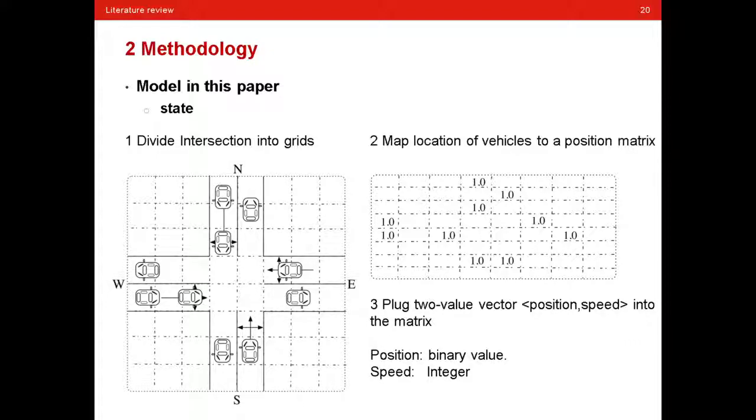For an intersection, it is divided into grids in favor of analyzing numerically. Then, the location of vehicles in intersection is mapped to a position matrix.